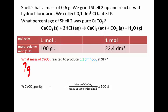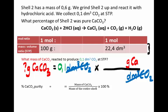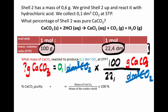We are asked what mass of calcium carbonate reacted to produce 0.1 decimetres cubed of carbon dioxide. We multiply by a conversion factor — the reaction ratio — making sure decimetres cubed of carbon dioxide is in the denominator and grams of calcium carbonate is in the numerator. We know 100 grams of CaCO₃ yields 22.4 dm³ of CO₂. Therefore, 0.1 dm³ of CO₂ required 0.446 grams of calcium carbonate — round to 0.45, but keep the full value on your calculator.